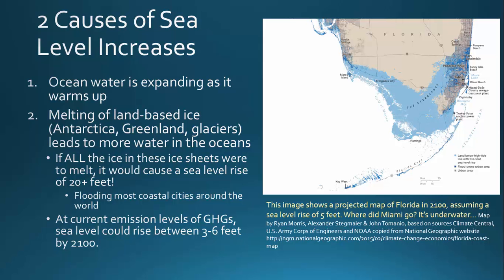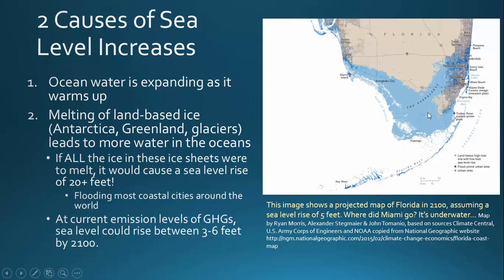This image on the slide comes from National Geographic, based on data collected from the US Army Corps of Engineers and NOAA. It shows what parts of Florida will be underwater with a sea level increase of about five feet. You may notice Miami is underwater, much of the Florida Keys are underwater, and the Everglades are underwater.